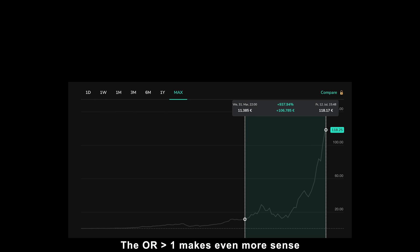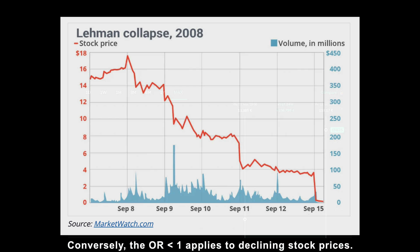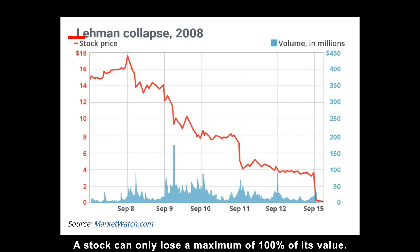Imagine a company like NVIDIA experiencing a massive 900% increase in value. That's what we call a 10 bagger. Conversely, the odds ratio below one applies to declining stock prices. A stock can only lose a maximum of 100% of its value, so the odds of it going down are limited compared to the potential for significant growth.